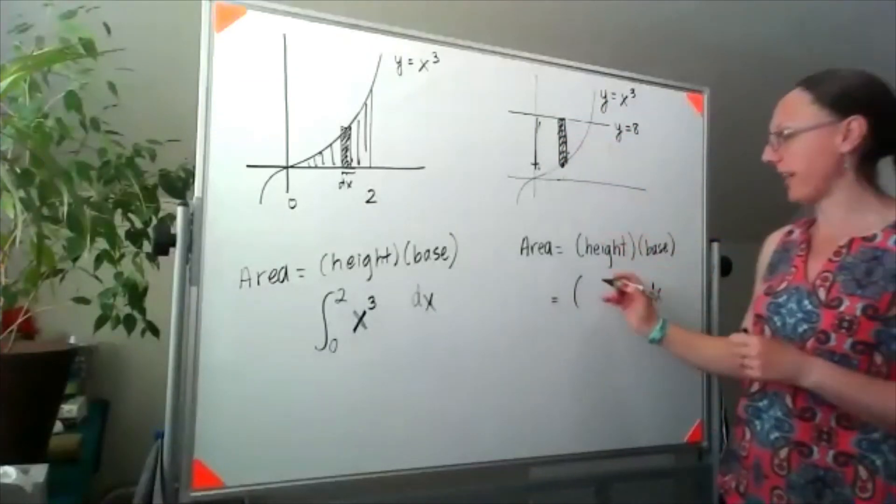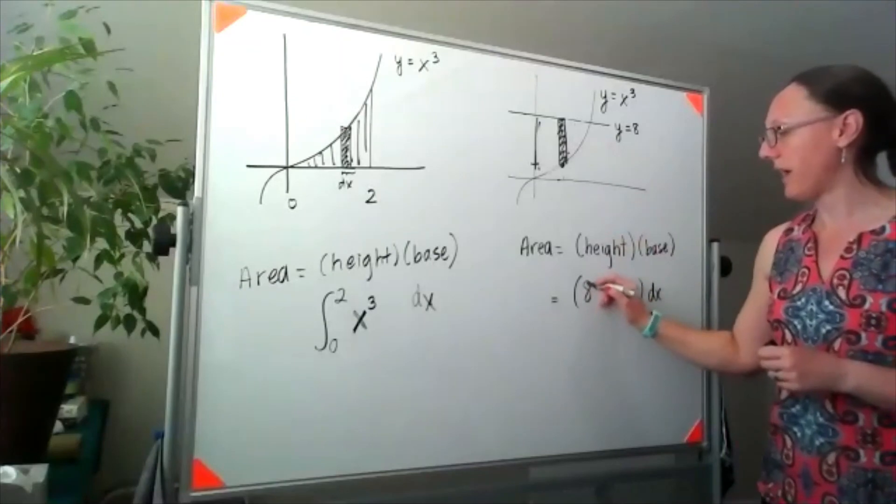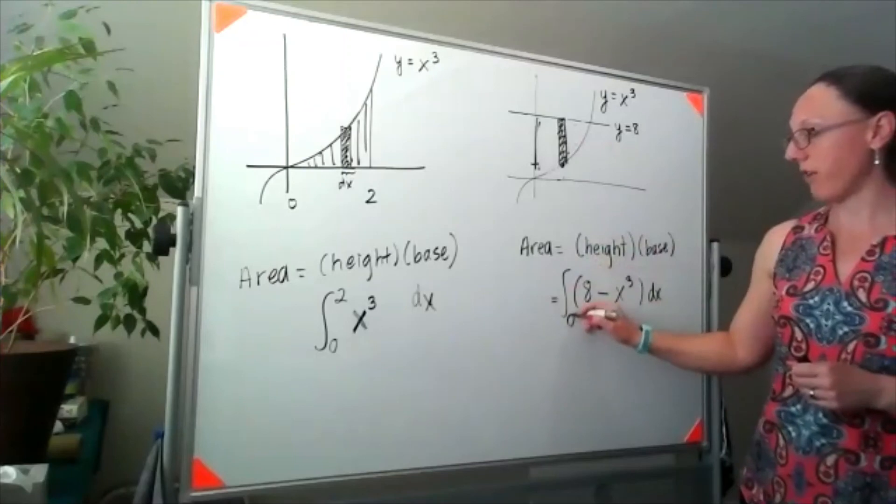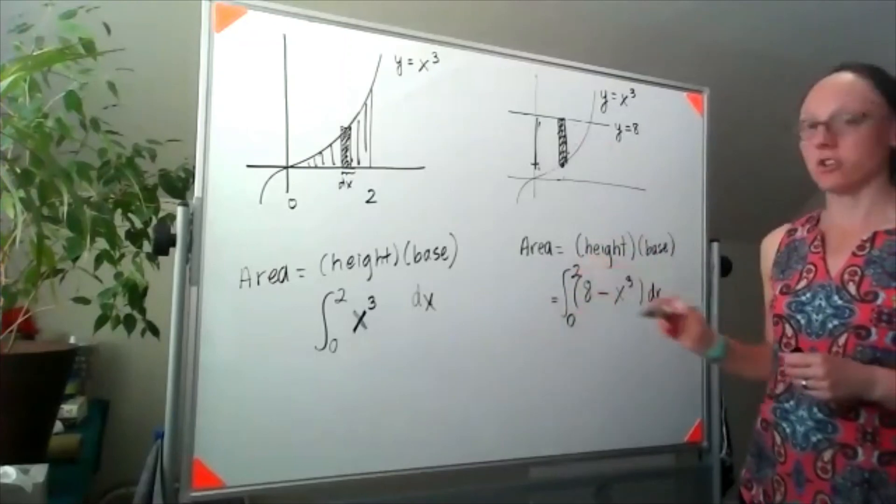So the height of my cross section here would look like 8 minus x cubed, and we'd be adding those up from 0 to 2.